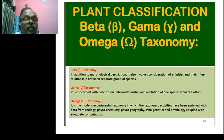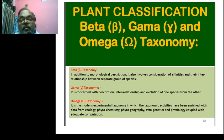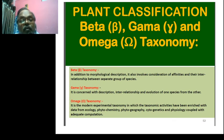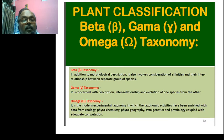The third is called omega taxonomy, which is called experimental taxonomy, involving taxonomic activities such as ecology, phytochemistry, phytogeography, cytogenetics, and physiological activities — which are related to evolution.